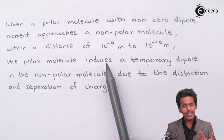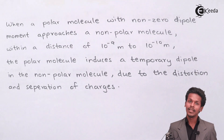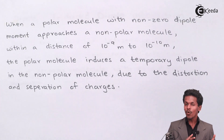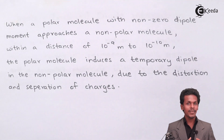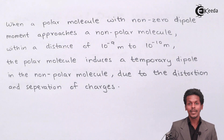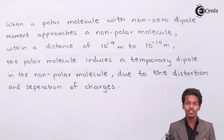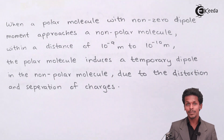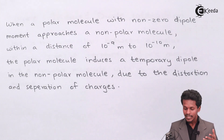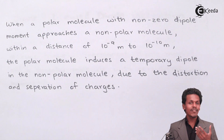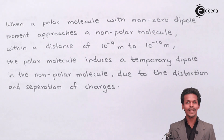The polar molecule induces a temporary dipole in the non-polar molecule. A non-polar molecule doesn't have a partially positive or negative charge, but when a polar molecule comes close to it during interaction, the non-polar molecule creates a partially positive and partially negative charge — it temporarily becomes polar. Due to this distortion or separation of charges, the interaction takes place.